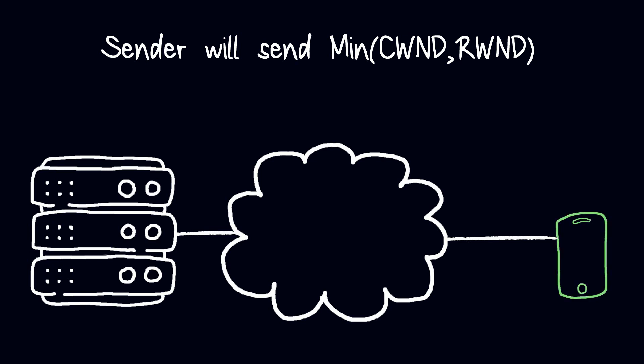The sender window, at a time, would be the minimum between the congestion window size and the receiver window size. Both the receiver and the network are entities that determine the size of the sender's window.